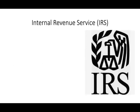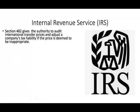In the U.S., the Internal Revenue Service has the authority to audit international transfer prices and adjust a company's tax liability if the price is deemed to be inappropriate. The IRS code, Section 482, gives IRS agents the ability to question and adjust your transfer prices. If they think you are setting up transfer prices for the sole purpose of reducing your tax liability, they can adjust it.